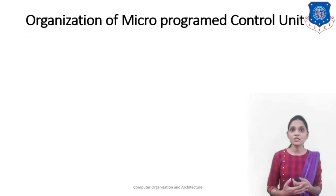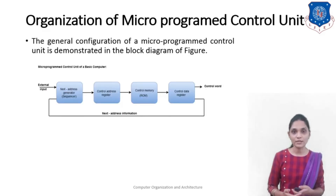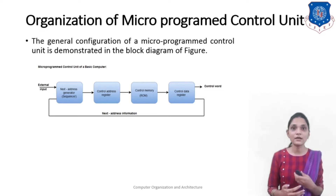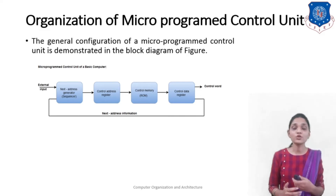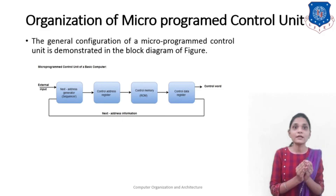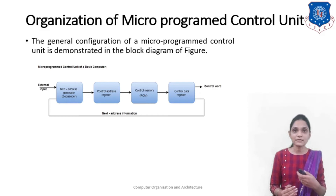Next, we will see the organization of the micro-programmed control unit. The general configuration is shown in this block diagram. It consists of the next address generator (or sequencer), a control address register, control memory (or ROM), and a control data register. The control address register contains the address location where your micro-instruction is stored inside the ROM, allowing you to access the ROM. The control data register contains the data from that location — the actual micro-operation to be performed. The next address generator is used to generate the next address in your sequence.